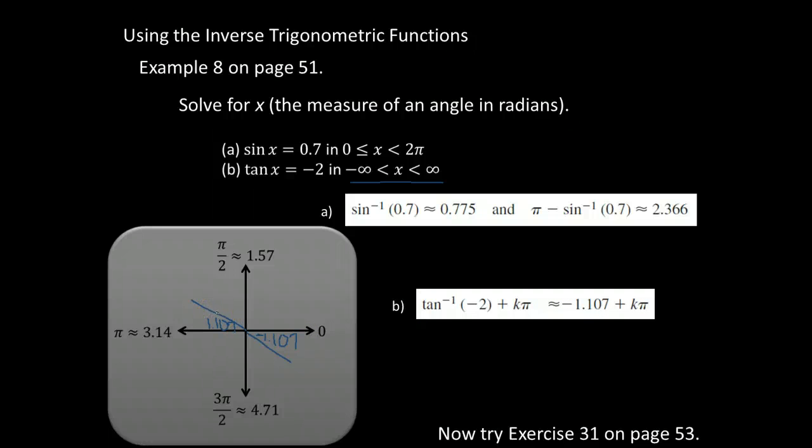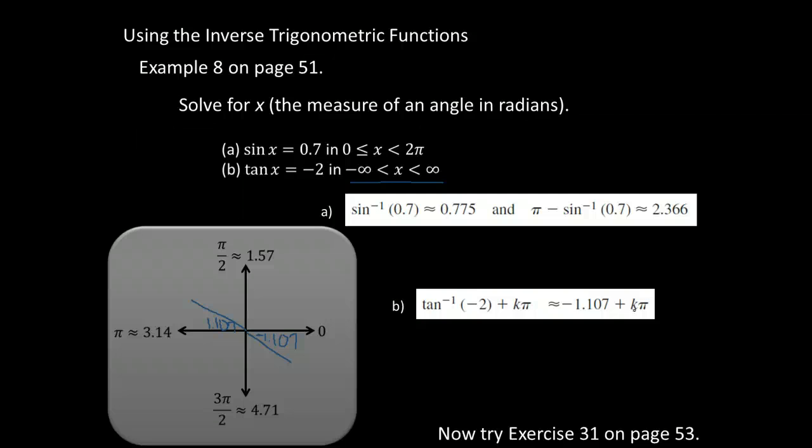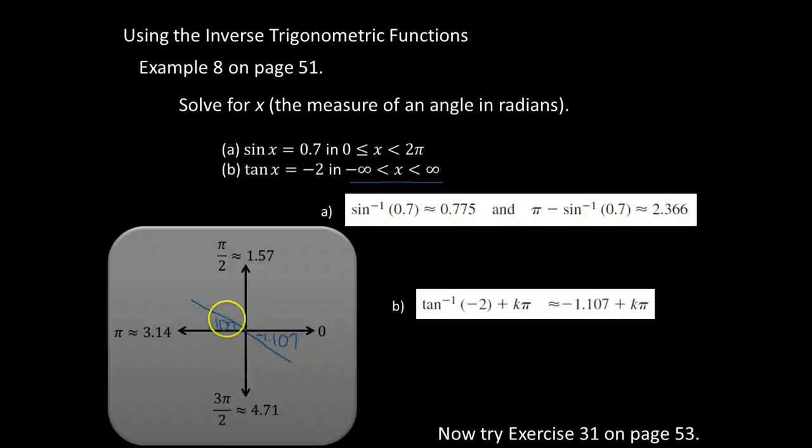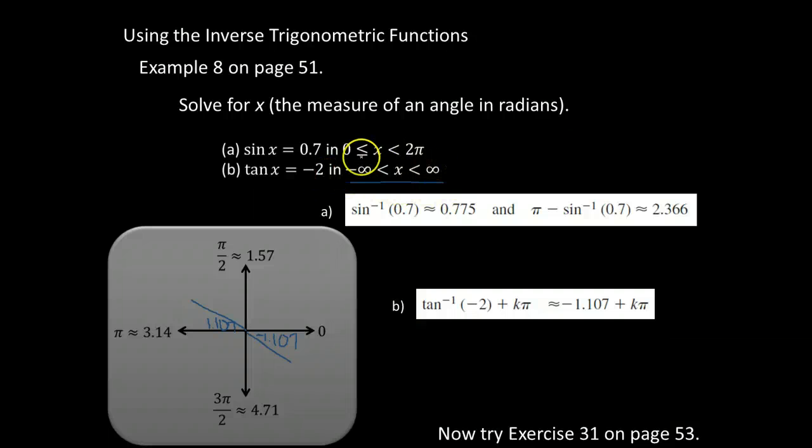And the reason we have to use kπ is that represents any integer value of π. So we could add 1π, we could add 2π, we could add 3π, we could add 8,000π. But any integer value of π, if we subtract that 1.107, is going to put us either here or here, and that's where the tangent would equal -2 from this huge infinite interval of negative infinity to infinity.